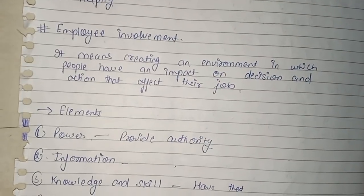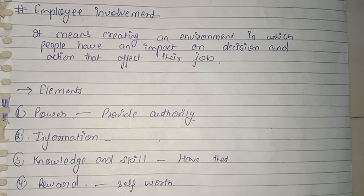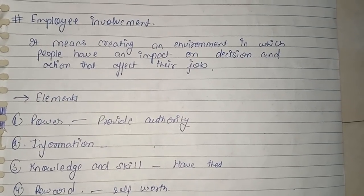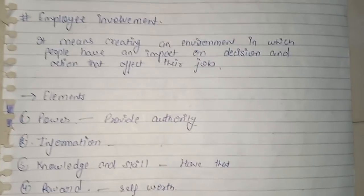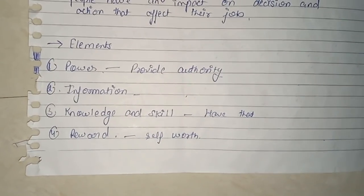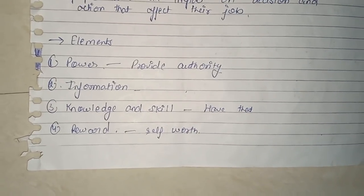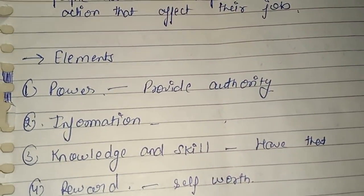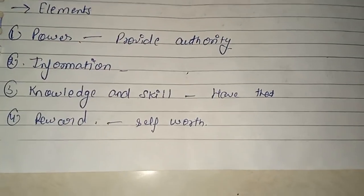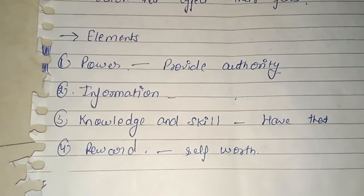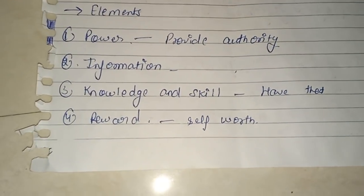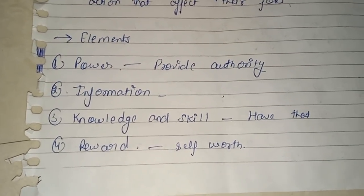The next topic is Employee Involvement. Employee involvement means creating an environment in which people have an impact on decisions and actions that affect their job. The elements of employee involvement are: power — giving authority so employees have the power to make decisions accordingly; information — providing a set of information so they can make informed decisions; knowledge and skill — every employee needs particular skill and knowledge to function in that environment; and reward — understanding that self-worth and value grows, meaning the reward is growing.